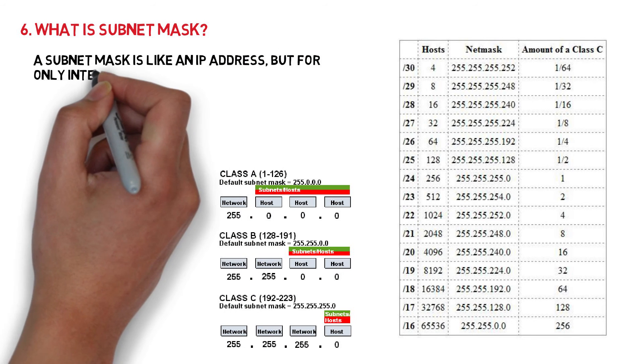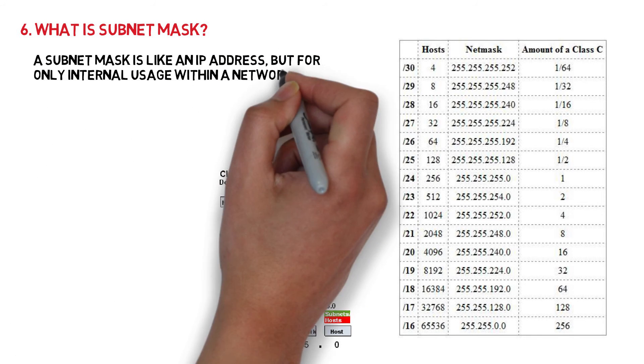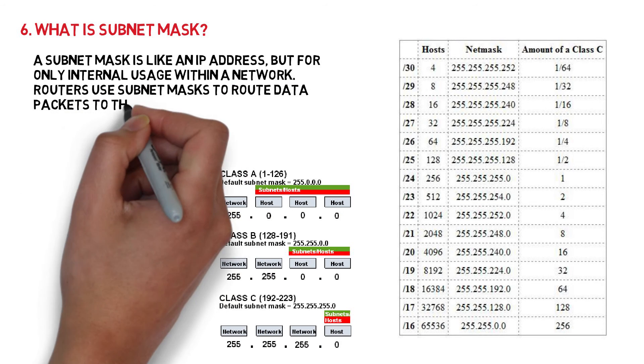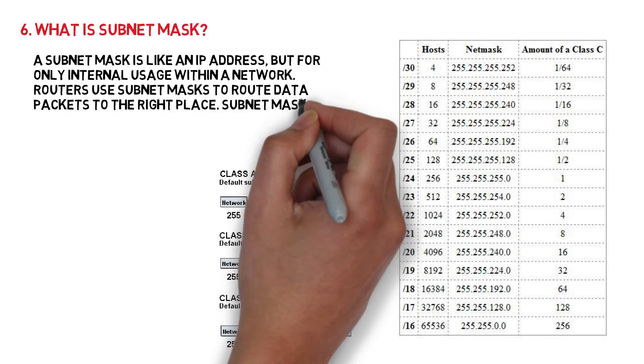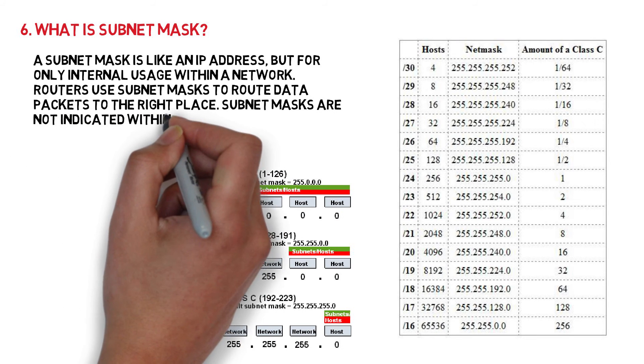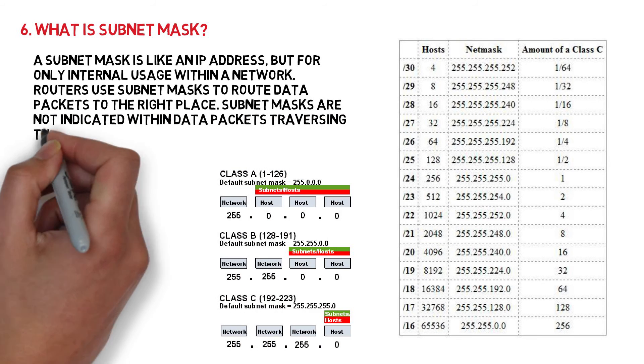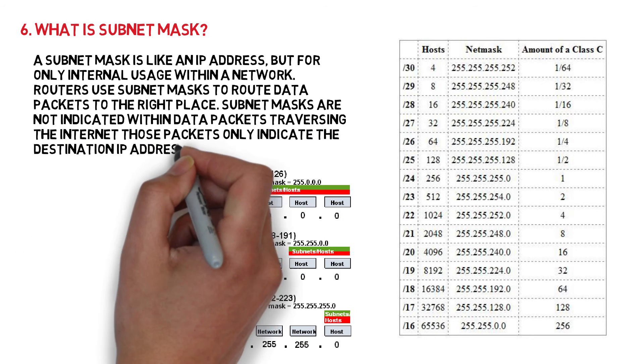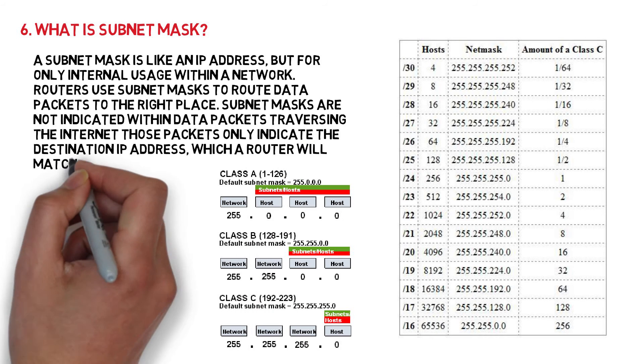What is subnet mask? A subnet mask is like an IP address, but for only internal usage within a network. Routers use subnet masks to route data packets to the right place. Subnet masks are not indicated within data packets traversing the internet. Those packets only indicate the destination IP address, which a router will match with a subnet.